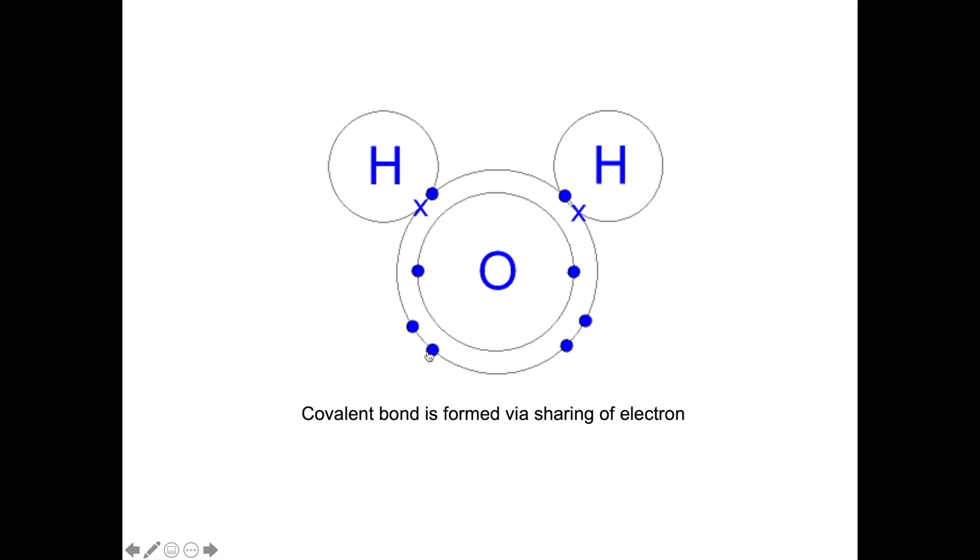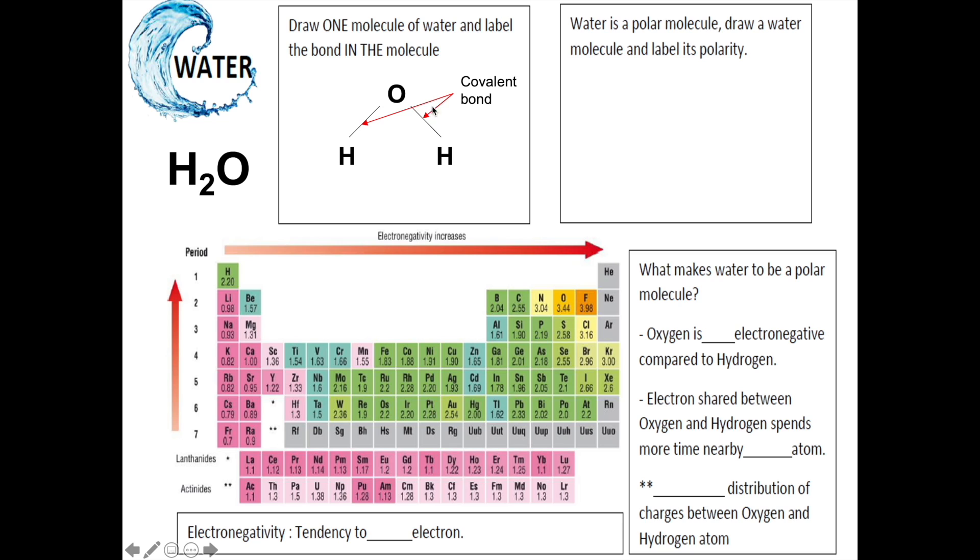Because of this sharing of electrons as well, both hydrogen atoms achieve stable electron arrangement by having two electrons in the inner shell. That is how covalent bond is formed between oxygen atom and hydrogen atom within a water molecule.